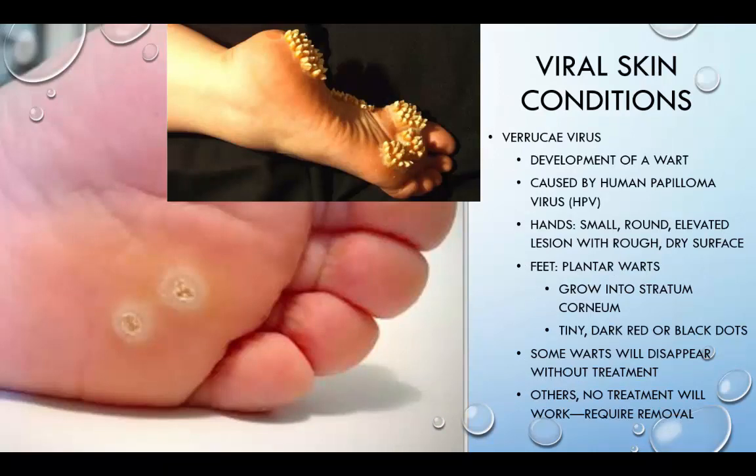Verruca virus is the development of a wart. There are more than 60 types of the human papillomavirus (HPV) that can lead to rapid growth of cells on the outer layer of the skin, resulting in a wart. Pressure on the wart increases pain, and it is often subjected to secondary bacterial infection because of its location. In the hands, these typically occur as small, round, elevated lesions with rough, dry surfaces. In the feet, plantar warts are more common, and have red or black dots representing capillaries penetrated by the root of the wart. They are likely transmitted from swimming pool decks or shower rooms. Within six months, most young people develop an immunological reaction to the virus and the wart may disappear with or without treatment; for others, any treatment will be ineffective and may require actual removal.